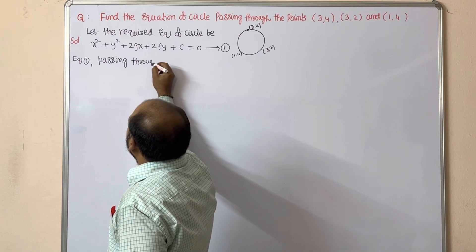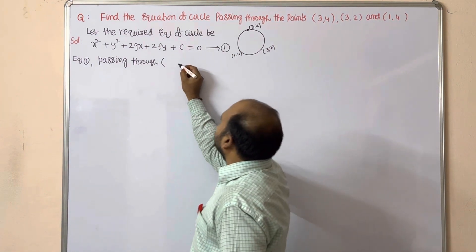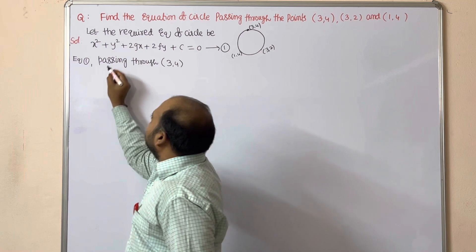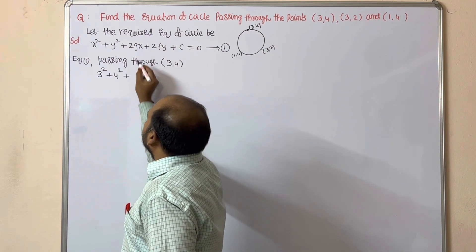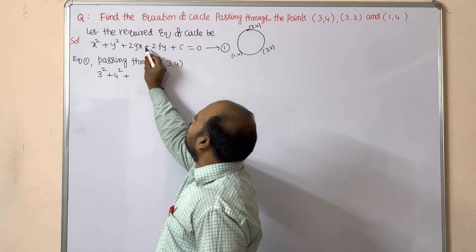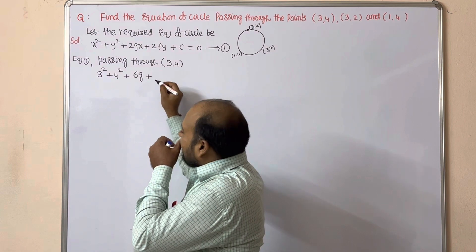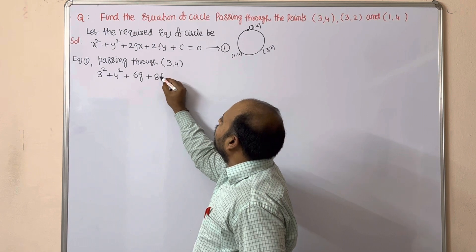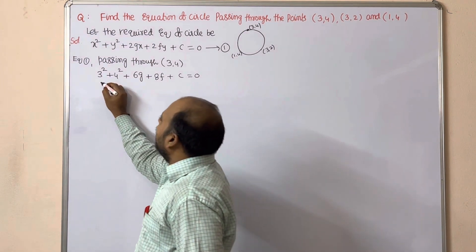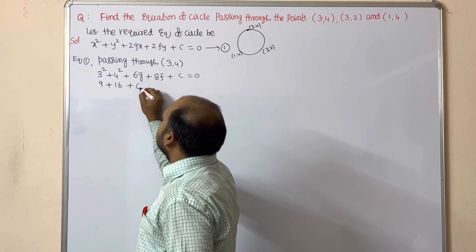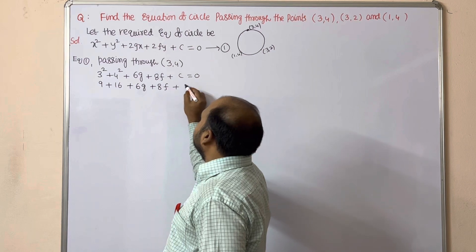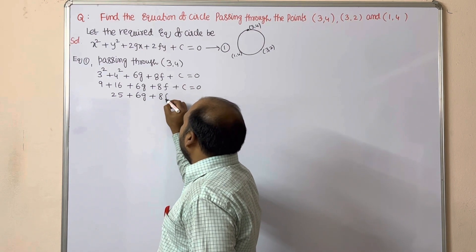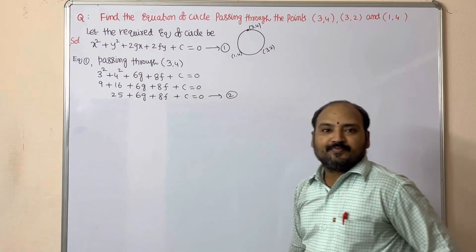Substituting the first point (3,4) into Equation 1: 3² + 4² + 2g(3) + 2f(4) + c = 0, which gives 9 + 16 + 6g + 8f + c = 0, so 25 + 6g + 8f + c = 0. Keep this as Equation 2.